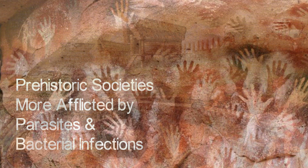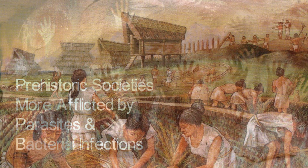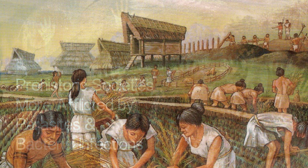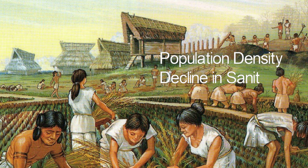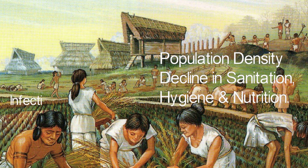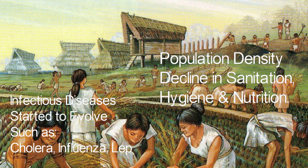The shift to agrarian life started around 10,000 years ago, with farming and the domestication of animals, which led to the development of settlement and urbanisation over time. The combination of increased population density and the decline of sanitation, hygiene and nutrition created the perfect environment for pathogen transmission and for diseases to evolve, such as cholera, influenza, leprosy, tuberculosis and smallpox.